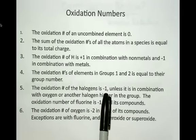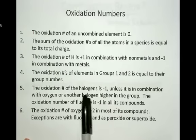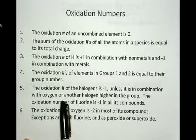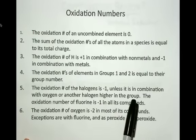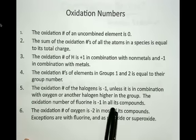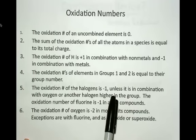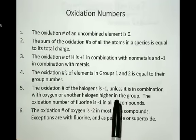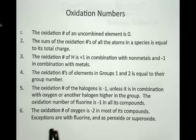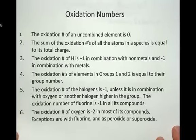The oxidation number of halogens is minus one. In ionic compounds that's truly the charge, unless the halogen is in combination with oxygen or another halogen higher in the group. The oxidation number of fluorine is minus one in all its compounds. Sometimes chlorine and bromine might have different oxidation numbers other than minus one — we'll see some examples. The oxidation number of oxygen is minus two in most of its compounds, with exceptions when combined with fluorine or as a peroxide or superoxide, but we won't cover those examples in this class.